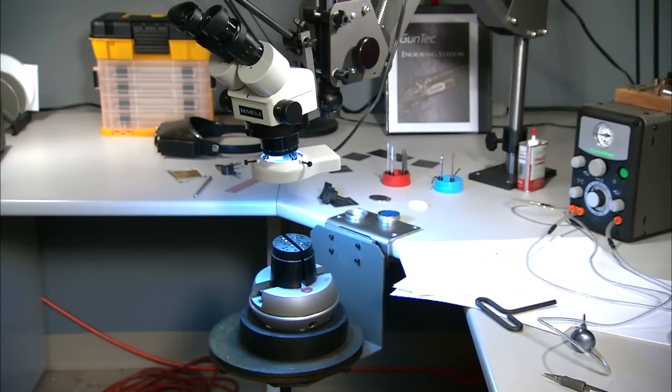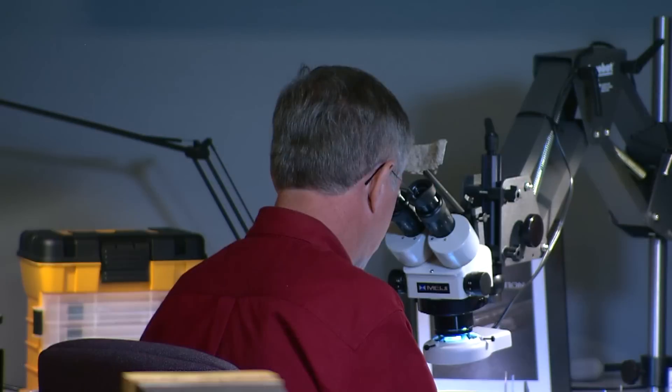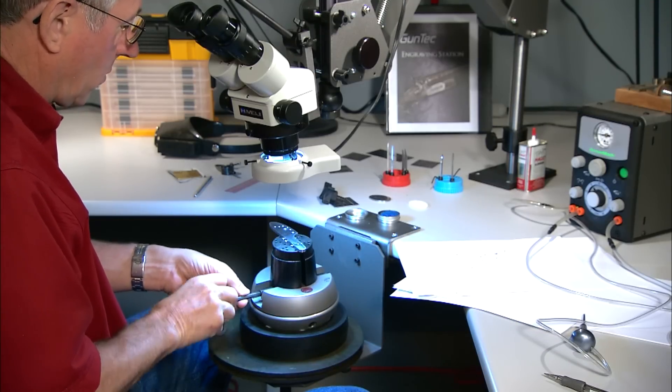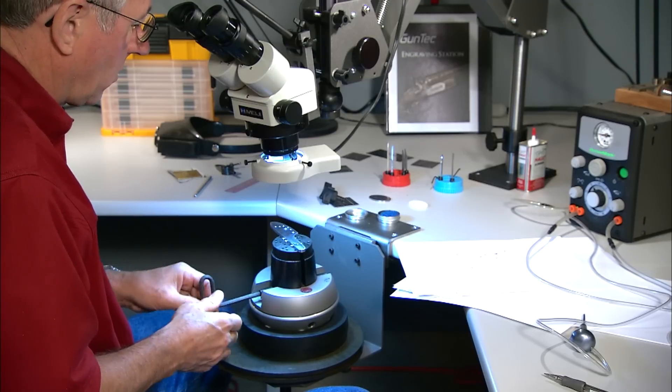A powerful microscope magnifies the image 22 and a half times so I can see the work better. Good lighting is essential and a light is built into the microscope. The lock plate is secured in a rotating ball of ice which gives me easy access to all sides.